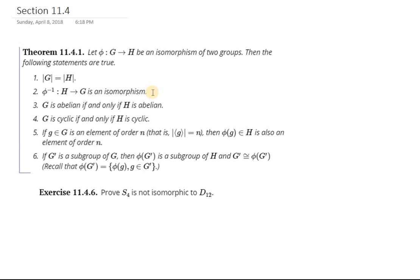Similar with cyclic. If you have two groups, one is cyclic and one is not, then they can't possibly be isomorphic.